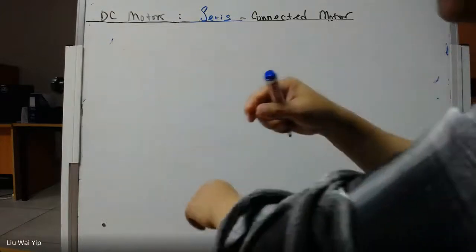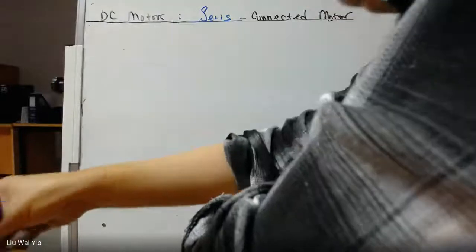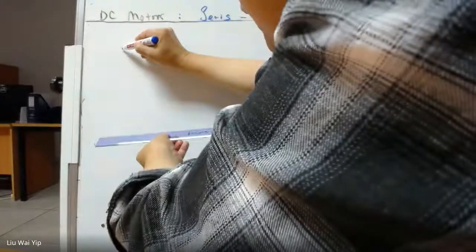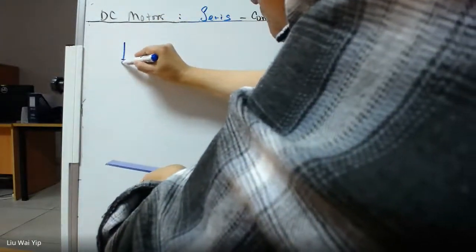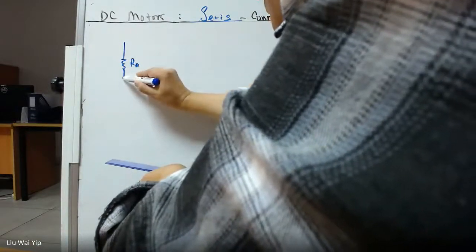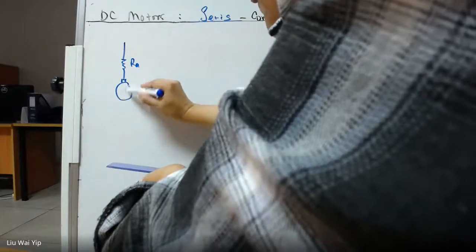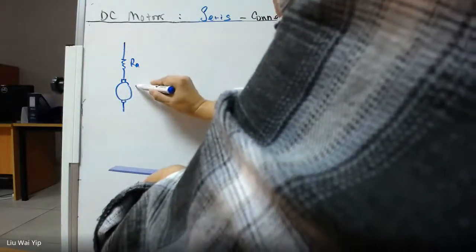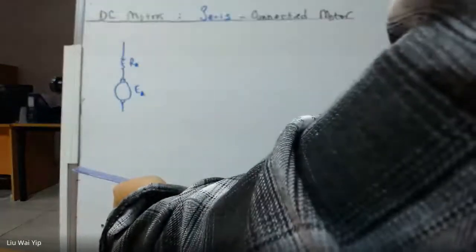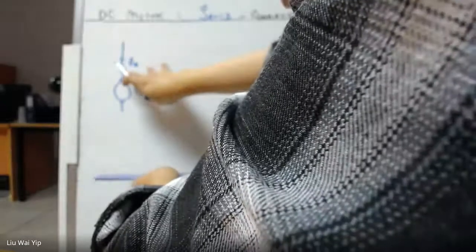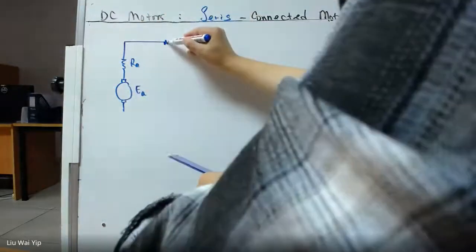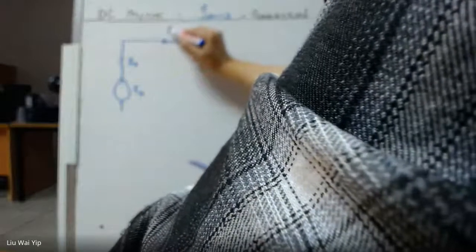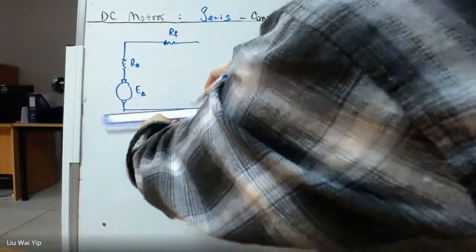So what does series connected motor mean? Suppose your motor has two sets of winding, just like any other motor. You have the armature resistance here, and you have armature rotation, armature back EMF. Then the armature is going to be connected in series with the field. So this is the main topology, the main ingredients of a series connected motor.